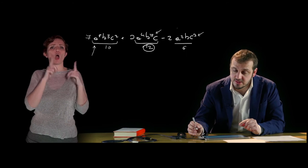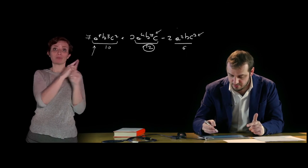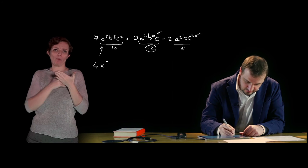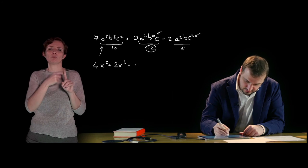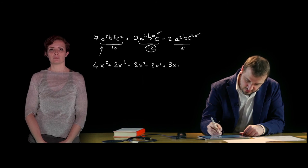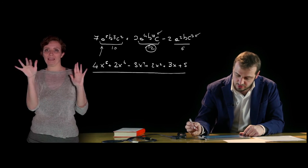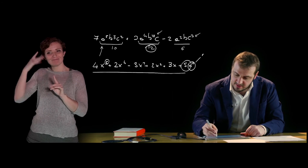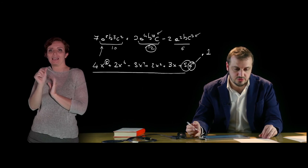I polinomi possono essere omogenei se sono caratterizzati da tutti i termini dello stesso identico grado; l'esempio che abbiamo fatto evidentemente è un polinomio che non è omogeneo. Un polinomio può essere ordinato se tutti i termini sono disposti in maniera tale che gli esponenti rispetto a una lettera siano in ordine crescente oppure decrescente. Un polinomio può essere completo rispetto a una lettera se per questa lettera presenta tutte le potenze, quindi da quella di grado massimo a quella di grado zero, che viene chiamata termine noto. Un esempio di polinomio ordinato e completo è 4x alla quinta più 5x alla quarta più..., dove sono presenti tutti i gradi da 5 fino al termine noto corrispondente a x alla zero, che è sempre pari a 1.